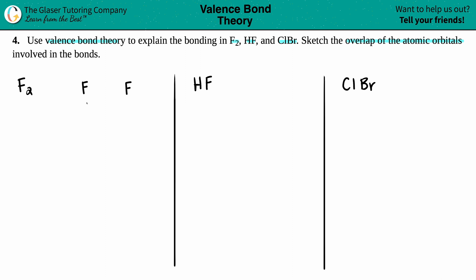Fluorine's electron configuration - if I look on the periodic table and draw it out - would be 1s² 2s² 2p⁵. If you don't understand where these come from, there's a whole playlist on electron configuration you can check out. The last numbers are always the valence electrons, so fluorine has seven valence electrons because two plus five equals seven.